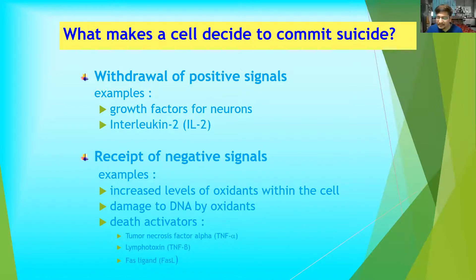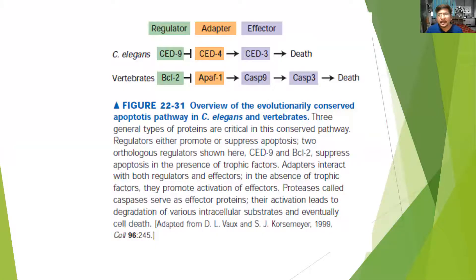Other activators coming from outside include, for example, tumor necrosis factor alpha, lymphotoxin TNF-beta, or Fas ligand. This was discovered properly in the case of C. elegans. You can see the relationship: three different kinds of molecules are shown — one is a regulator, which decides when cells should undergo apoptosis; second is the adaptor, which induces the effector molecule; and the final one which leads to the killing is the effector molecule.